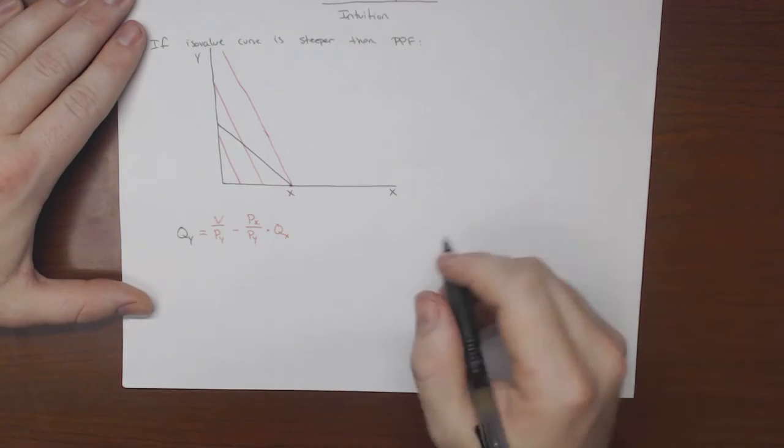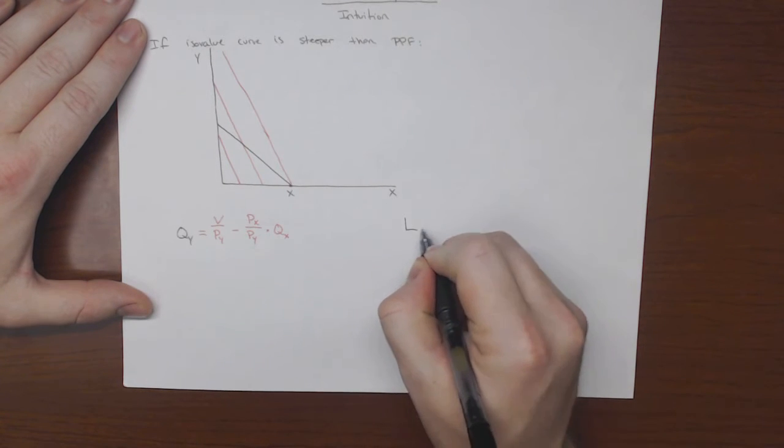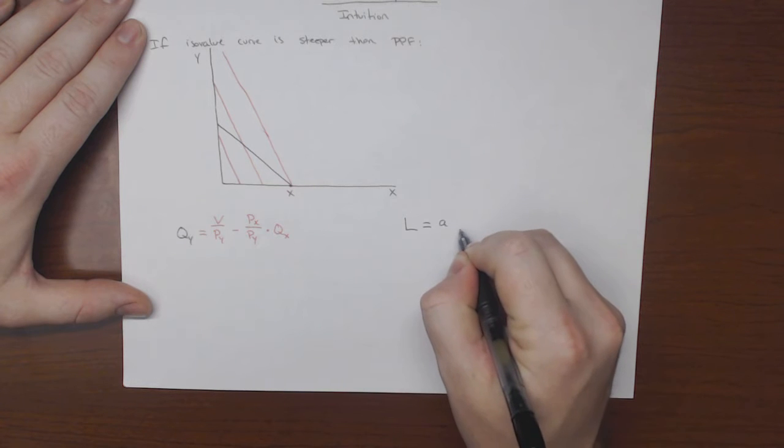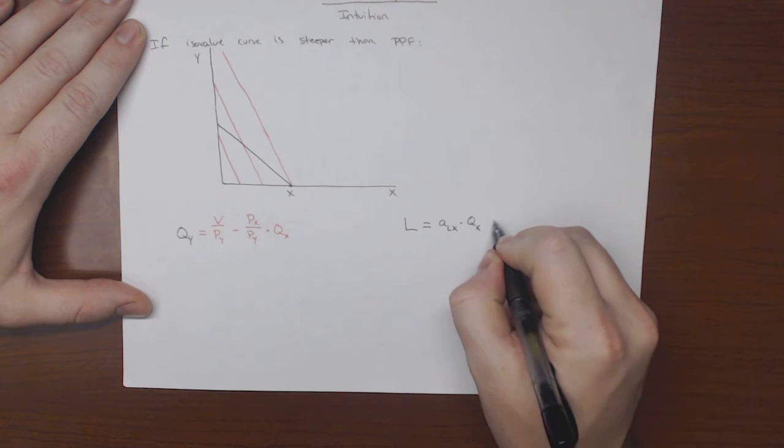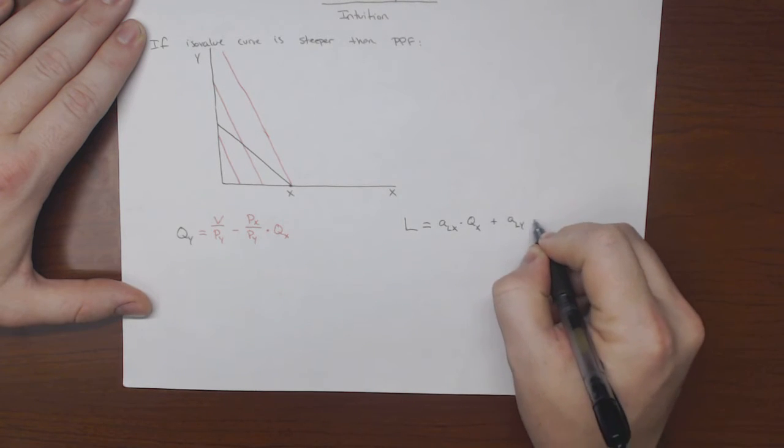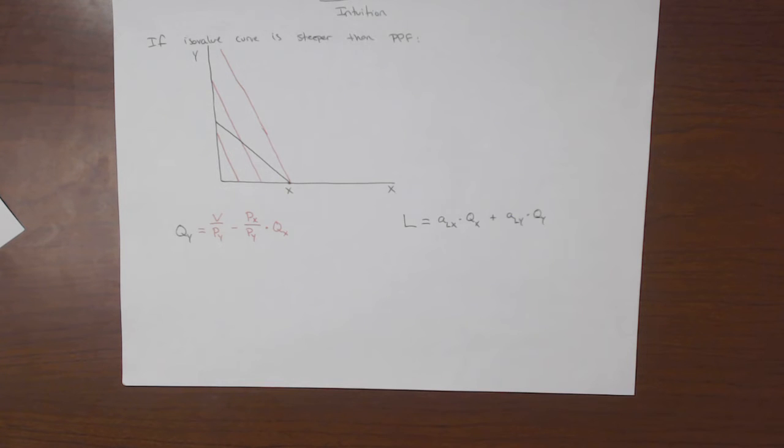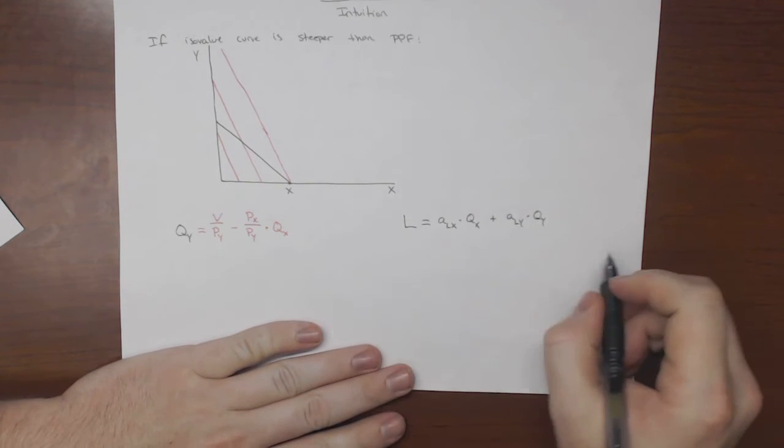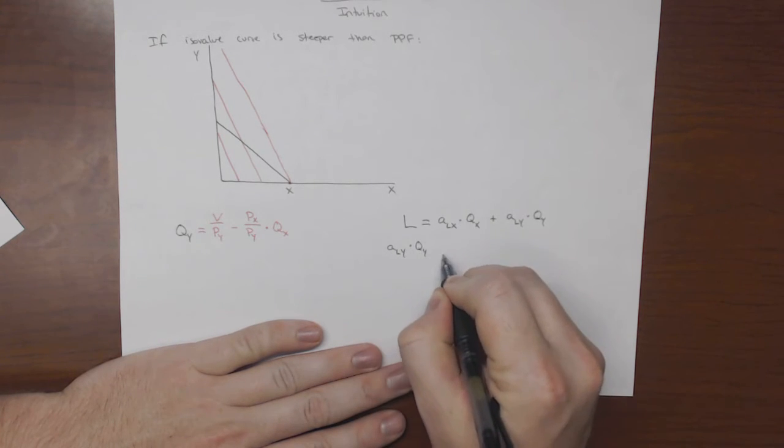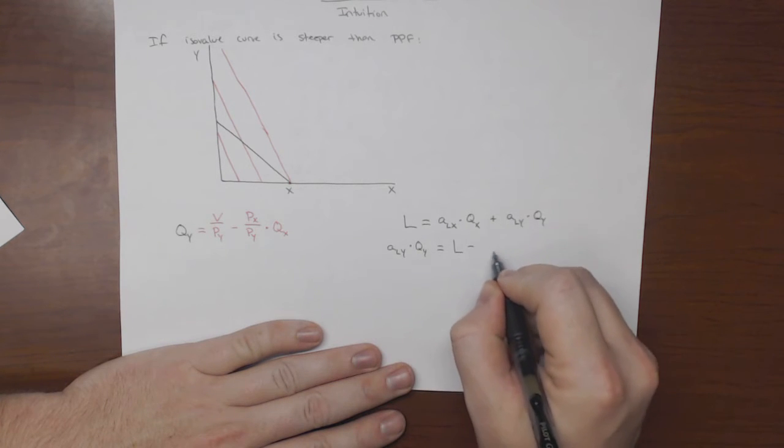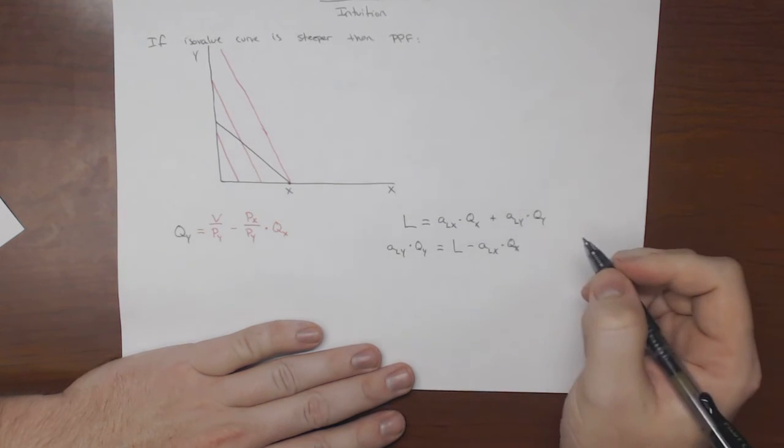Now remember, we had from lesson four, we had a similar equation for the PPF curve, which was the total amount of labor is equal to alx times the amount of x plus aly times the amount of y. And so we can solve this for qy as well. So let's go ahead and do that. So we have aly times qy is equal to l minus alx times qx.